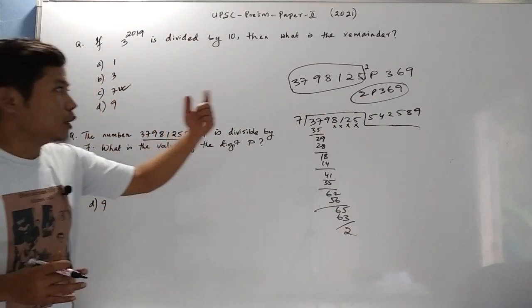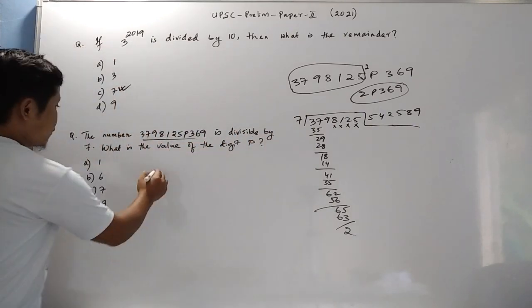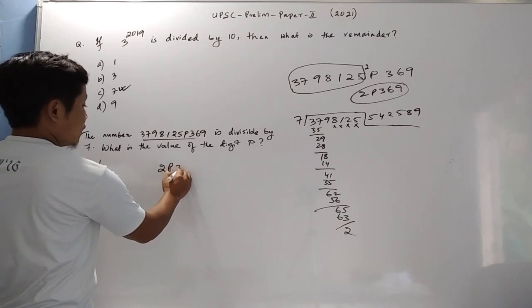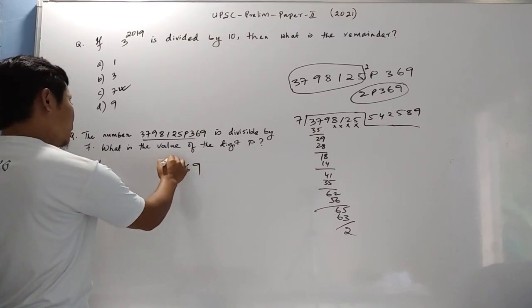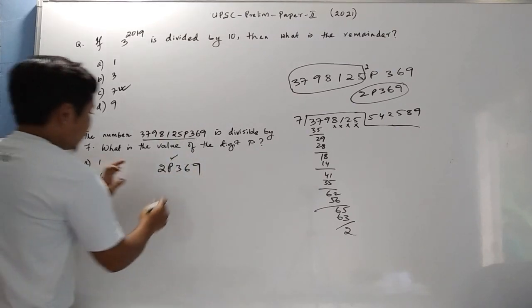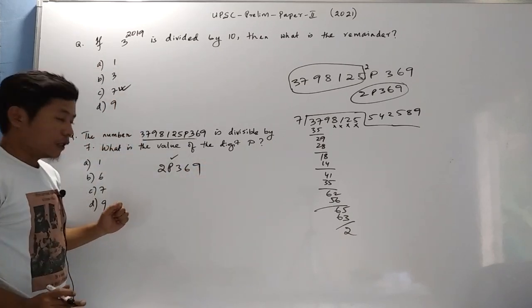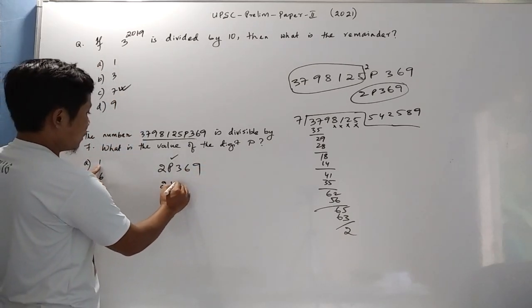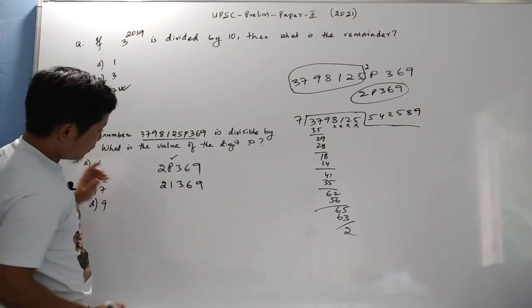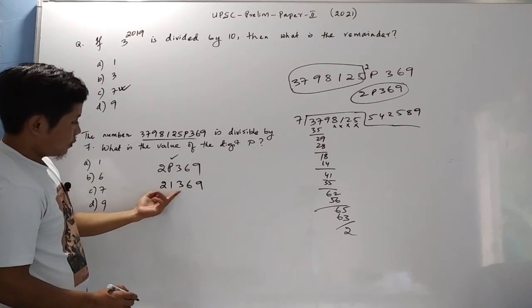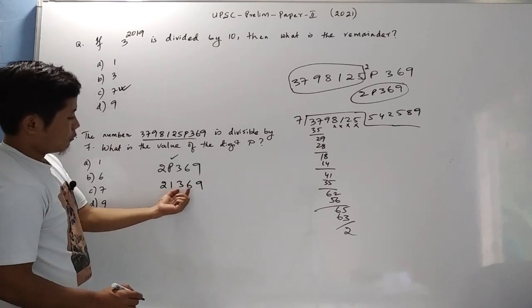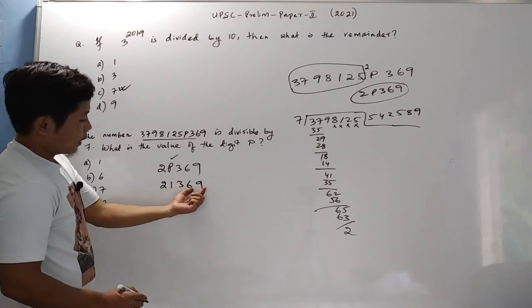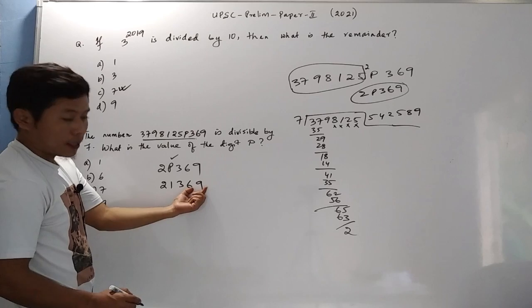So let us write 2P369. What will be the value of P for this number to be divisible by 7? Let us start from 1. 21369, will it be divisible by 7? 7 times 3 is 21, remainder 0, then 5... 19 remainder, which is not divisible by 7. So we can eliminate 1.